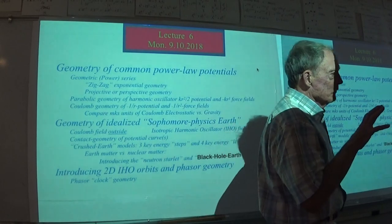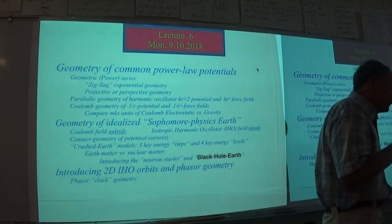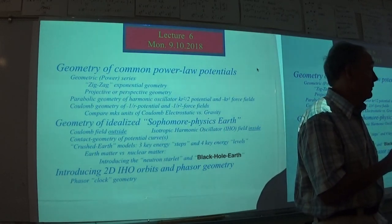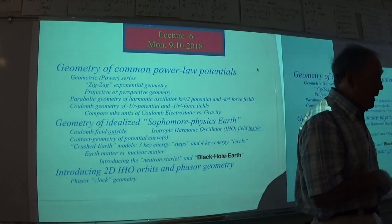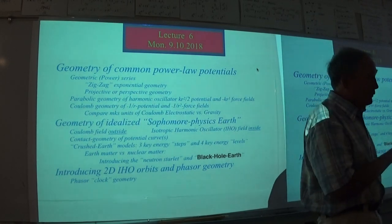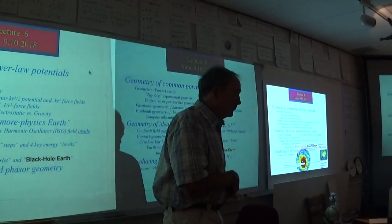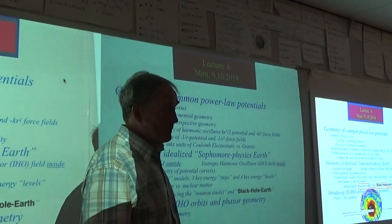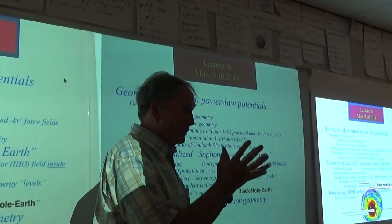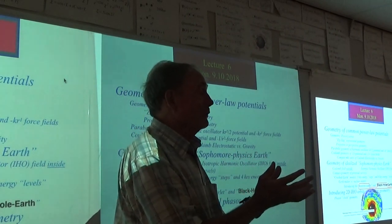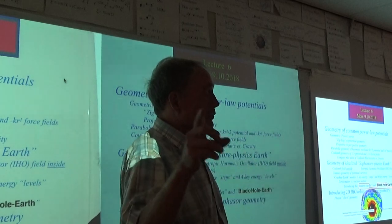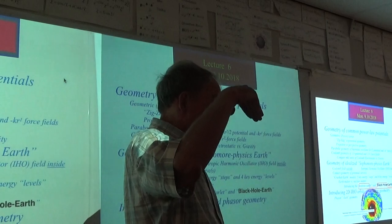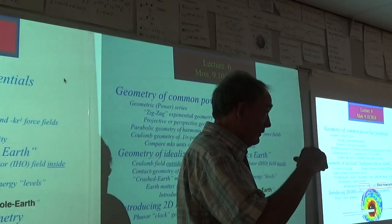Today I'd like to talk about the geometry of potentials in general, but mostly the two potentials that have the highest symmetry: namely the harmonic oscillator and the Coulomb field. We'll put the two of them together in a model I call the sophomore physics Earth, in which you imagine a perfectly spherical, uniform-density sphere called the Earth with the Coulomb field outside of it, and a harmonic oscillator parabolic potential inside.